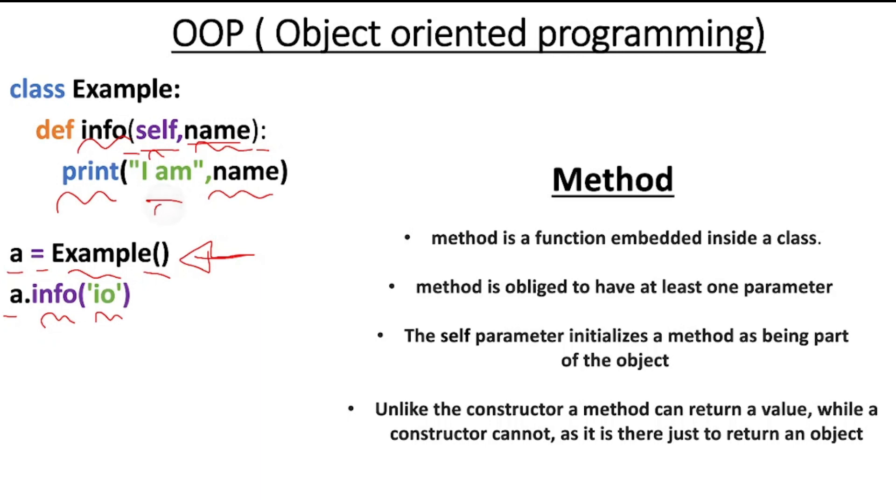Now a method is a function embedded inside our class. So here we have a function, however it's being called a method as it is placed inside a class. A method is obliged to have at least one parameter, specifically the self parameter.